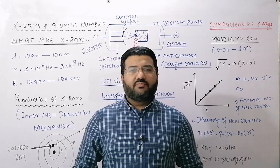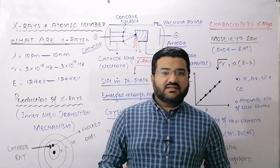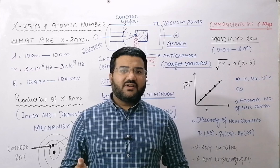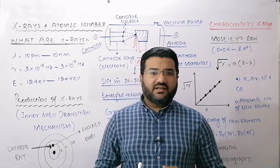In this lecture we are going to discuss X-rays and atomic number, and how this concept is related to Moseley's law. X-rays were discovered by Roentgen in 1895, so they are also called Roentgen radiations.